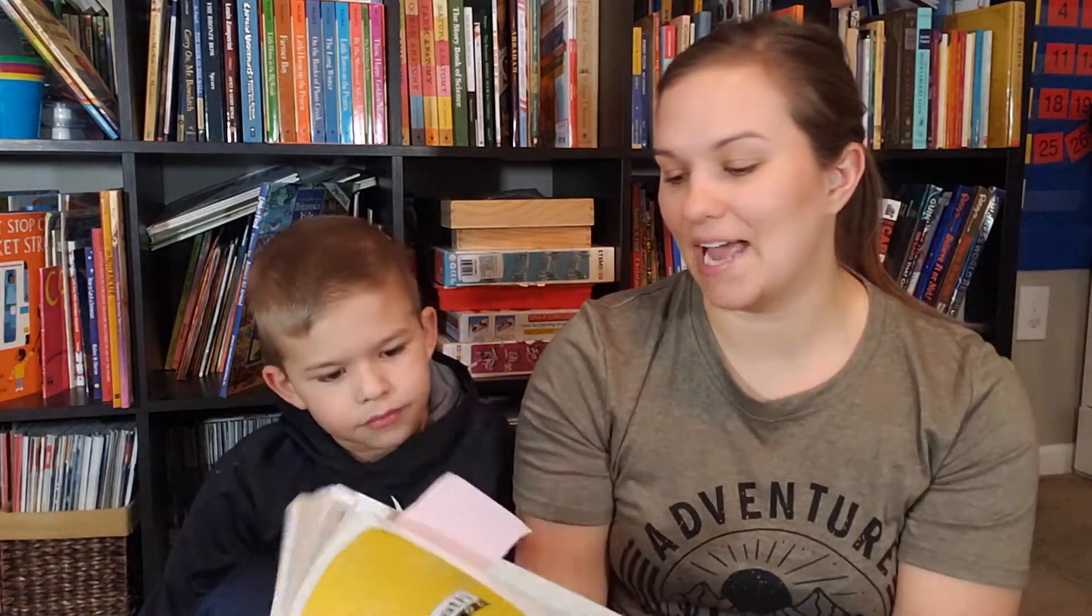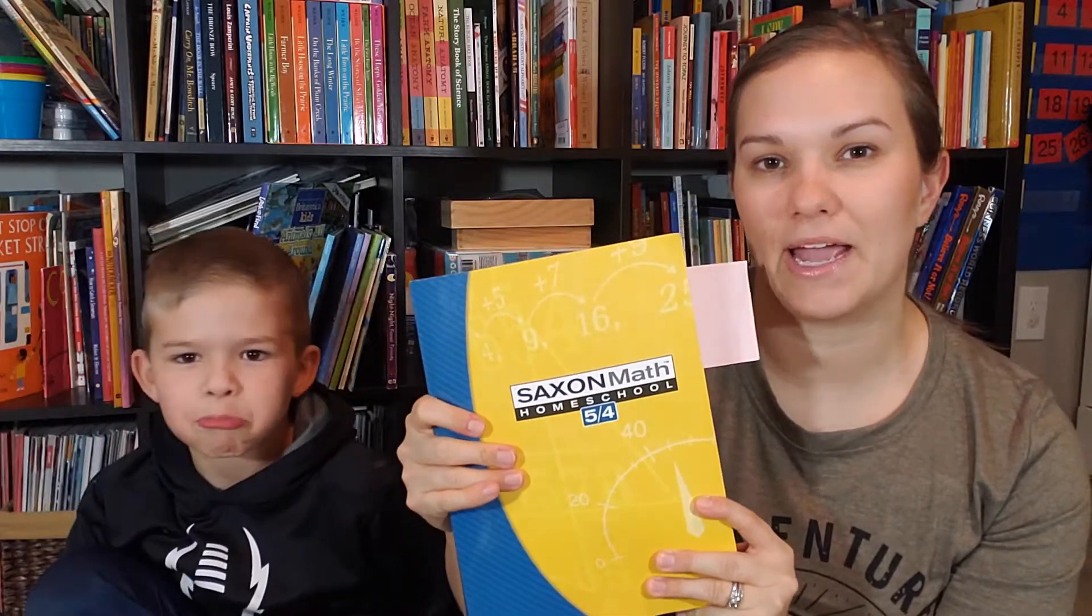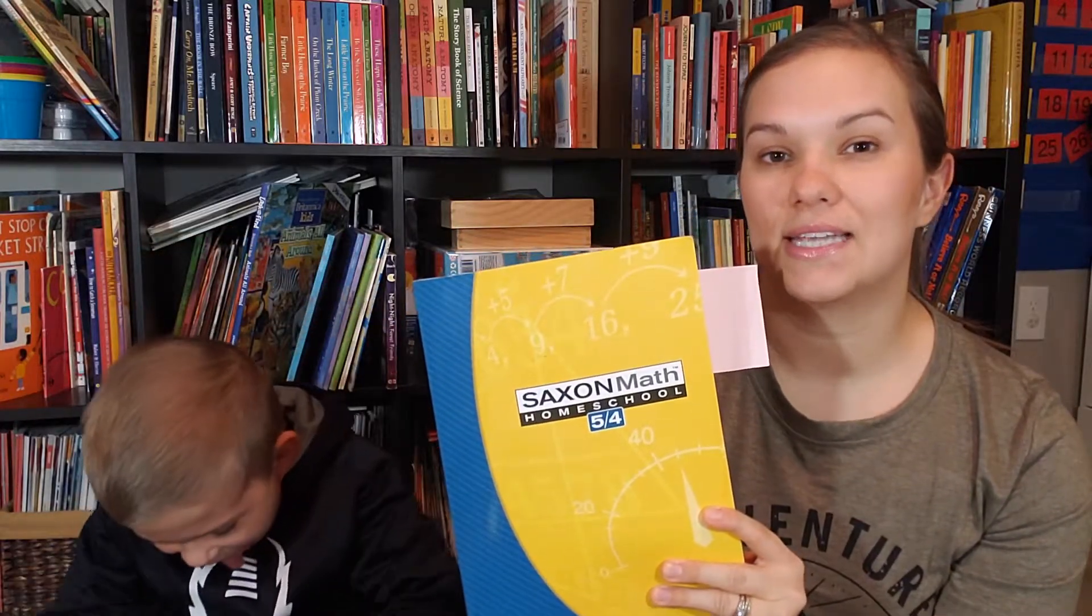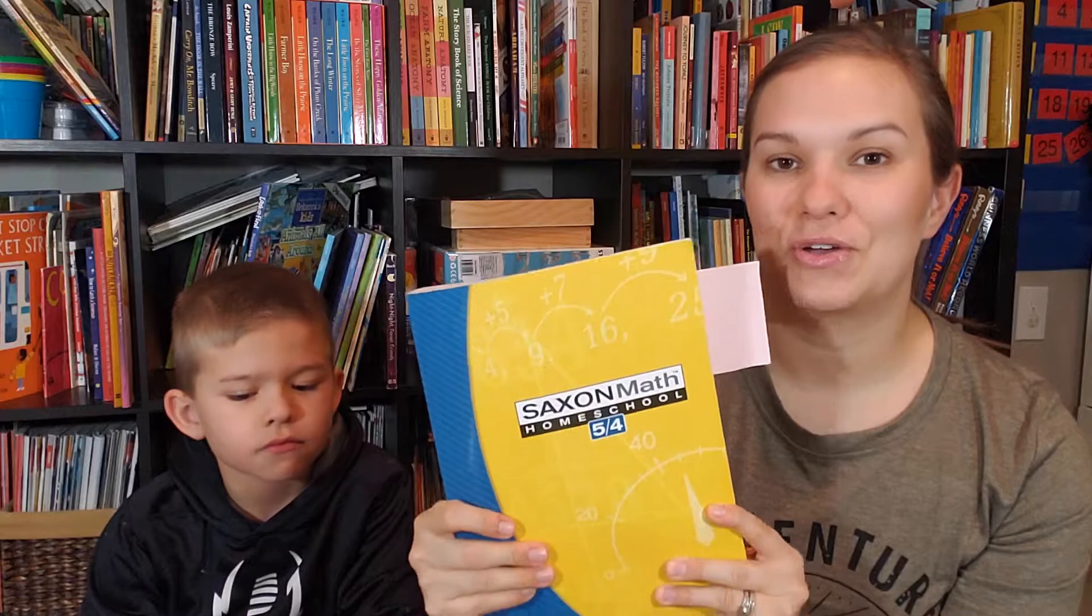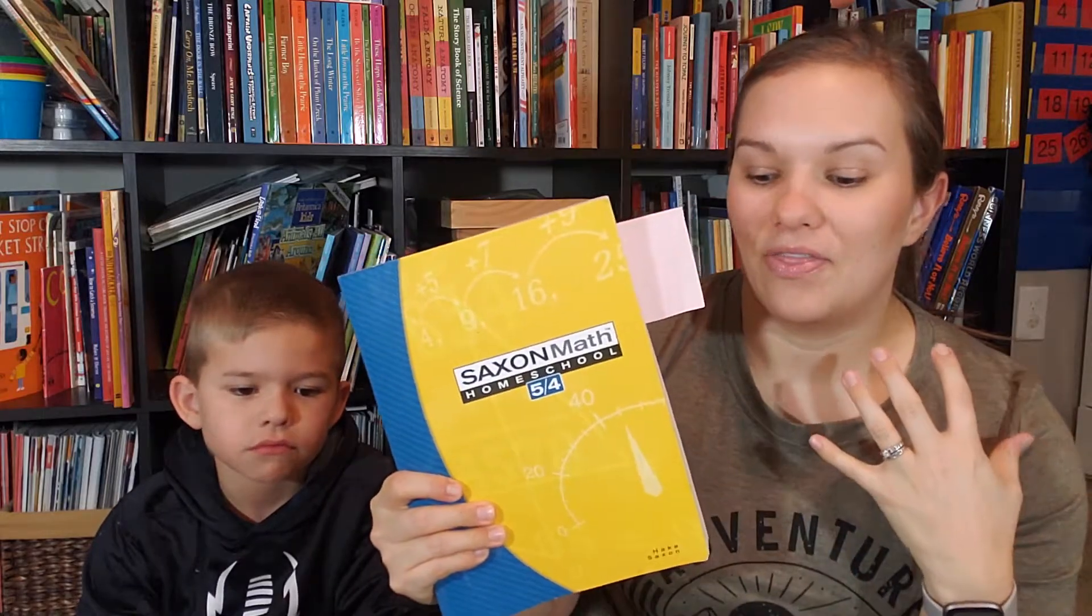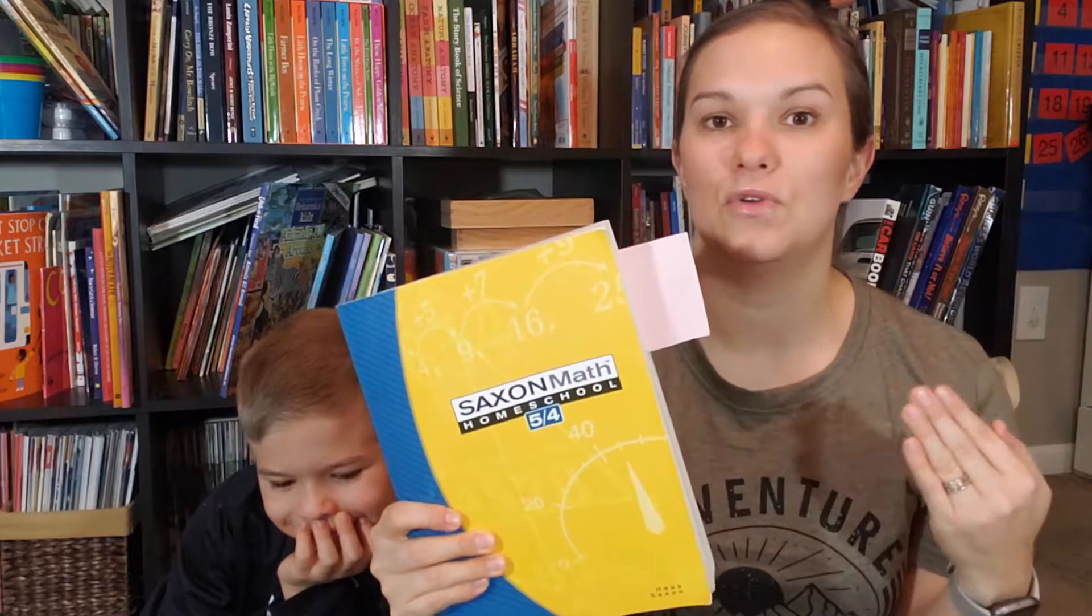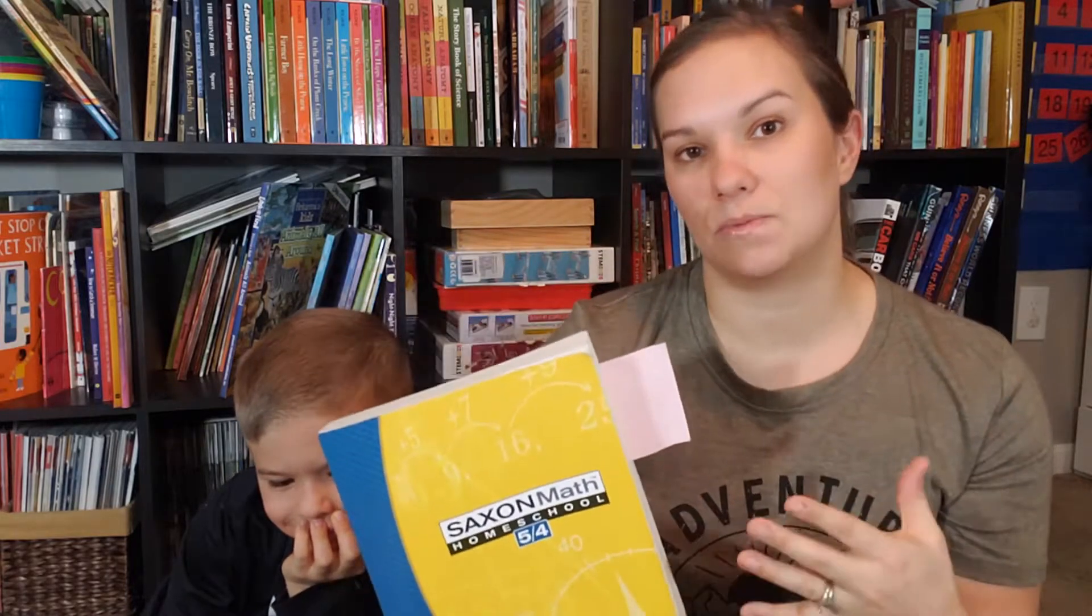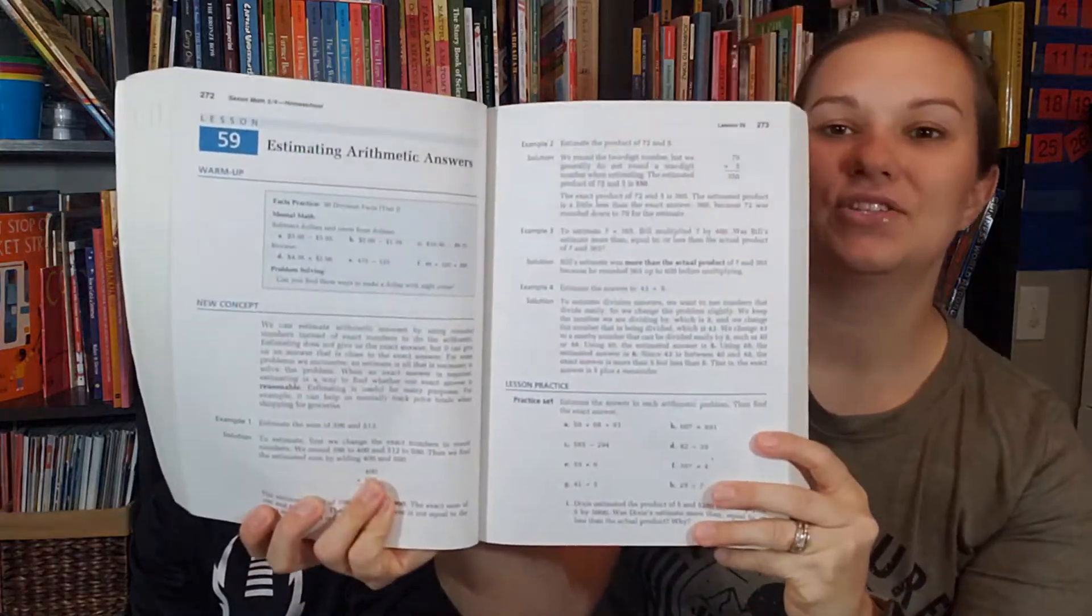So we're just going to walk you through and show you how we go through a math lesson using Saxon math 5-4. You'll see that I have it tabbed. This is the level in which it really changes from the spiral approach. So if you're unfamiliar with the spiral approach, you'll want to go back and watch the Saxon math lesson that I did with my first grader.